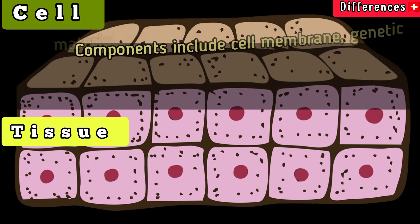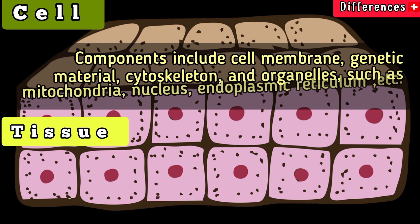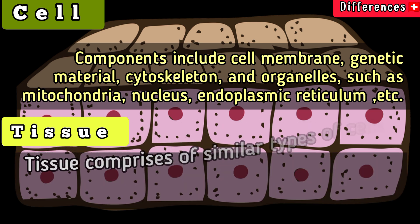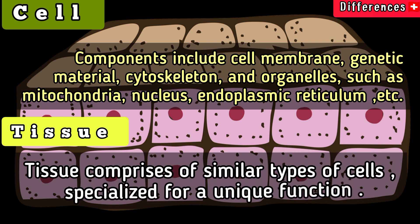Cell components include the cell membrane, genetic material, cytoskeleton, and organelles such as mitochondria, nucleus, endoplasmic reticulum, etc. A tissue comprises similar types of cells specialized for a unique function.